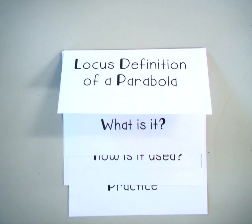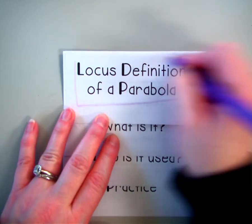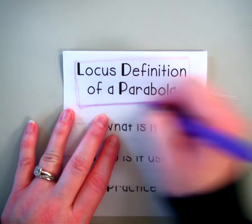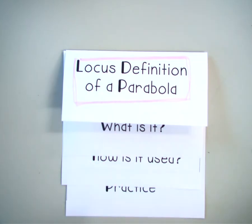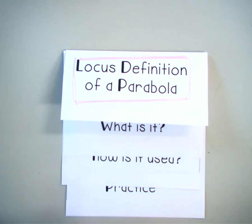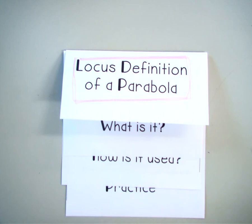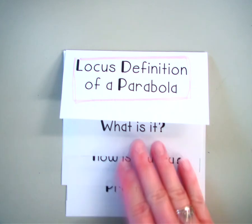For our notes this time around, we're going to be talking about the locus definition of a parabola. The locus definition is another way of being able to write the equation of your parabola. This is used quite frequently in many real-world contexts. There are a lot of places where they use the locus definition to write the equation for a parabola, as opposed to using vertex form or standard form.